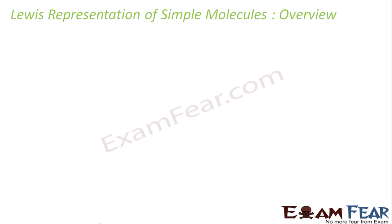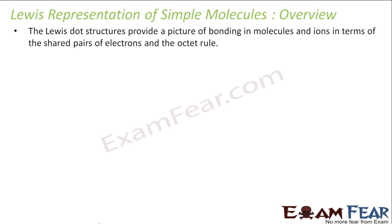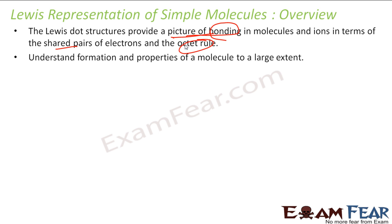Having understood the Lewis representation, let's take an overview of Lewis approach. The first advantage of the Lewis approach was it was able to provide a good picture of bonding in the molecules in terms of shared pairs of electrons and the octet rule. It was also helpful because this theory helps us understand the properties of molecules to a large extent, the formation, why sodium reacts with chlorine and why double bond is formed, single bond is formed.